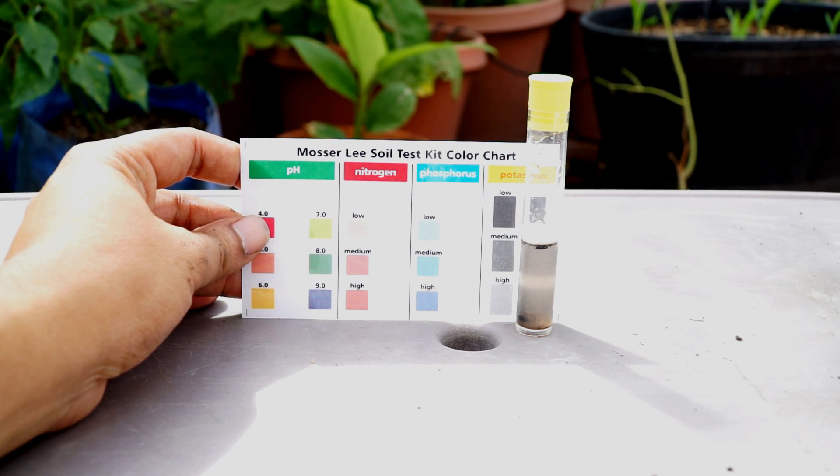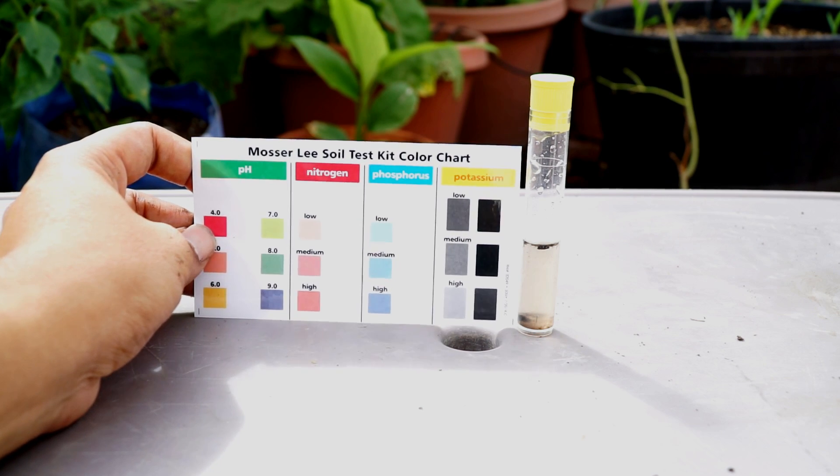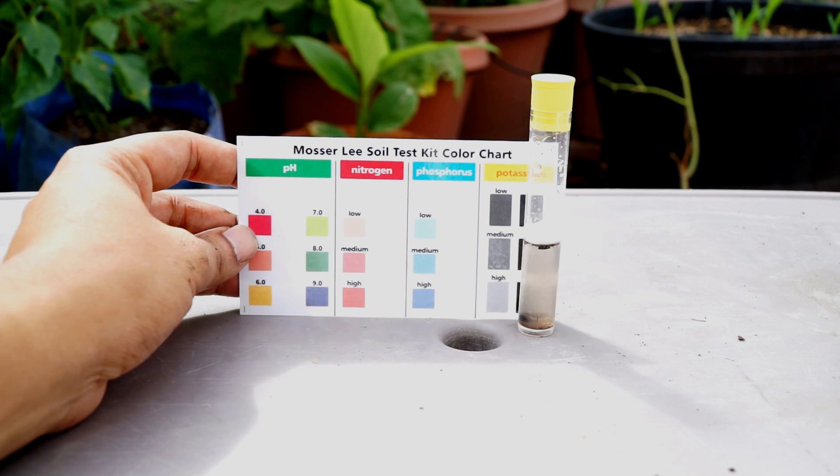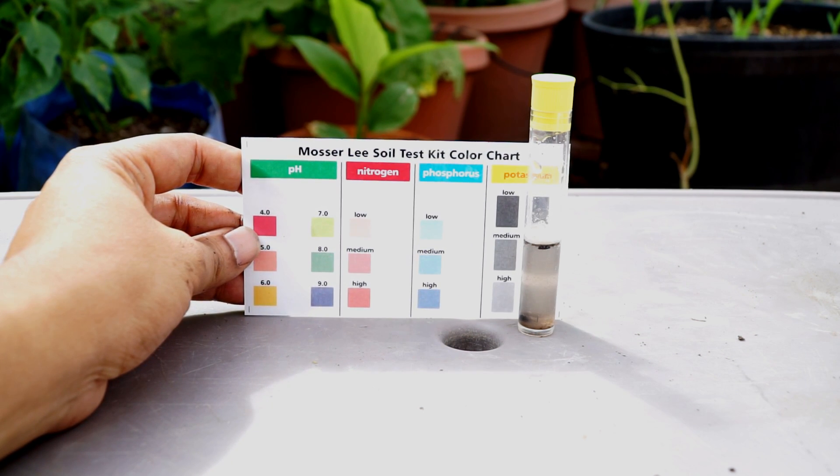Note that most soils will have a lot of potassium and phosphorus. It's nitrogen that most of the soils lack because plants use a lot of nitrogen when they grow.